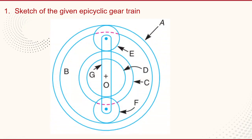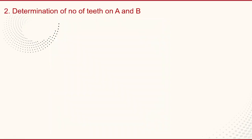Now let us look at the diagram. Gear wheel A and gear wheel B are the annular wheels. Gear wheel C and D are the compound wheels, and these four wheels are mounted at point O. E is meshing with A and C, and F is meshing with B and D. This is the arrangement of the gear train. G is acting as an arm, and gear E and gear F are pinned at each end. The arm is rotating about O.